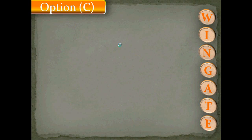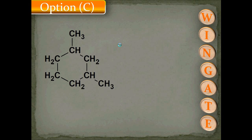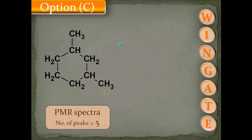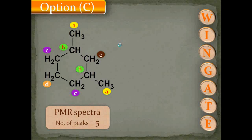Now let us see why options C and D are false. For option C, 1,3-dimethylcyclohexane, the PMR spectra gives 5 peaks: protons A are on the side chain, protons B are attached to the side chain, protons C are ortho to the side chain, protons D are meta to the side chain, and proton E is ortho to the side chain but sits between the two side chains, giving a distinct signal — total 5 PMR signals.